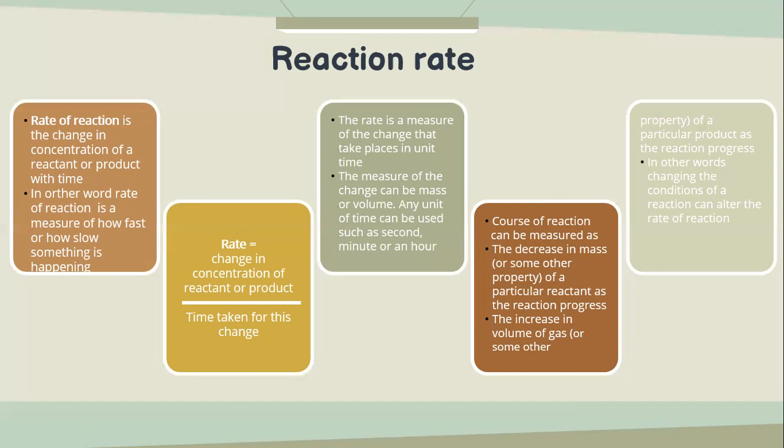The rate is a measure of the change that takes place in unit time. The measure of the change can be in a form of mass or volume. Any unit of time can be used, such as second, minute, or an hour. The formula to calculate rate is: change in concentration of reactant or product divided by time taken for this change.